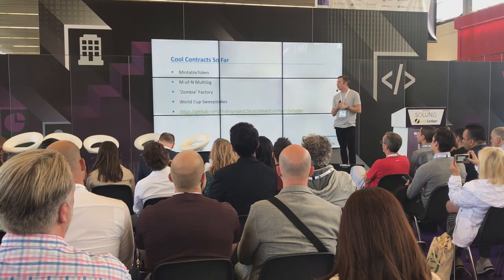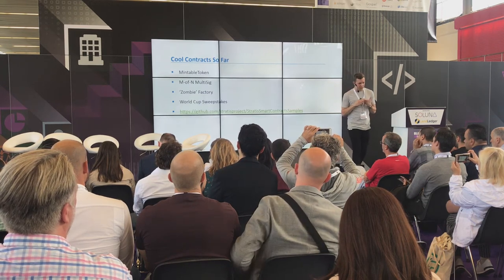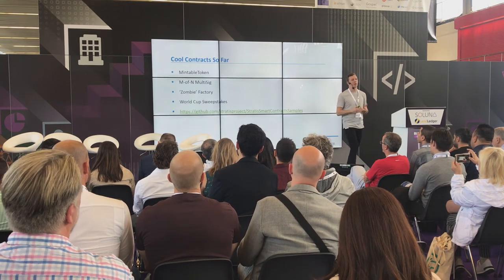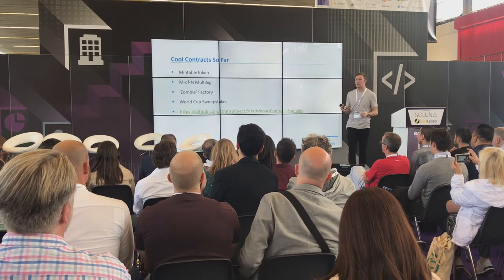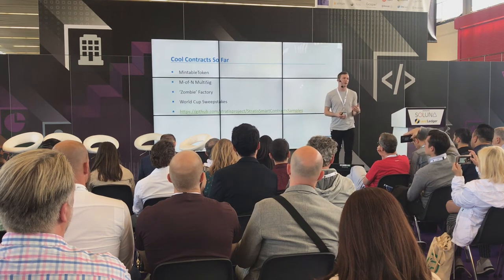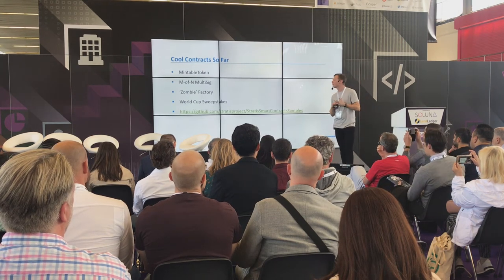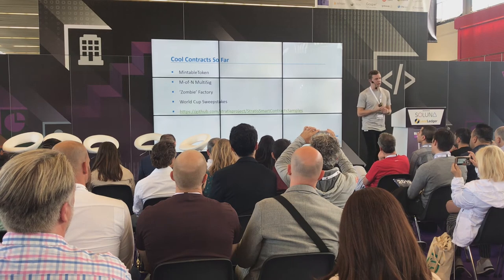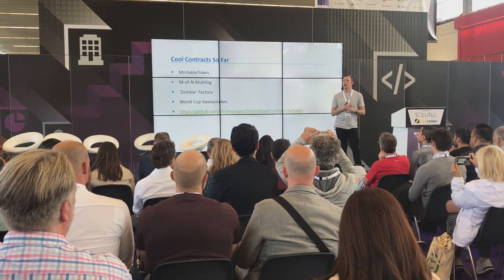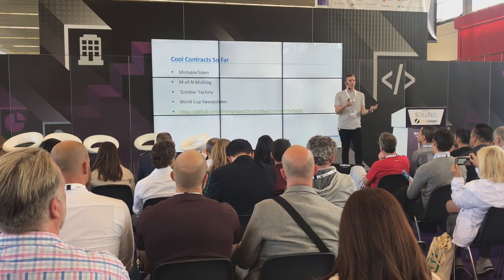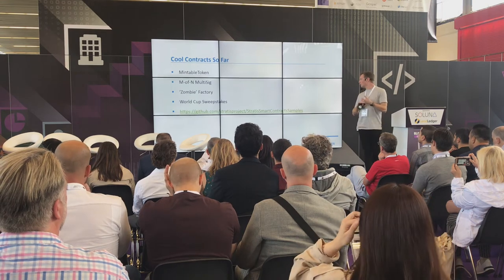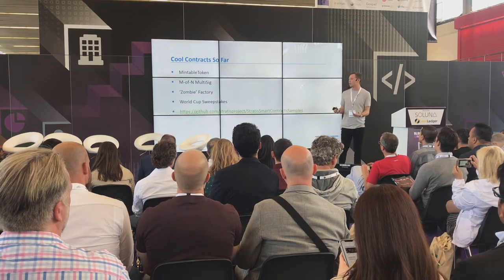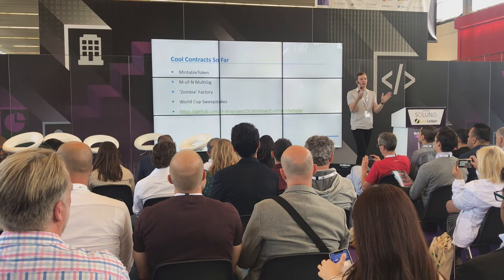We've had a range of cool contracts that people have been building so far. The first is a Mintable Token — it's kind of like an ERC-20 equivalent from Ethereum built in C#. We have an M-of-N multi-sig wallet, so if there are five of you and you want to only be able to send funds when three people agree, this is being built in C# as well. A Zombie Factory — which sounds a bit weird — but it's one of the very first tutorials people do in Ethereum to build collectibles, and the fact that someone built it in C# shows we're pretty much on par with Ethereum. And also a World Cup sweepstakes, which is a completely self-executing contract running between community members.